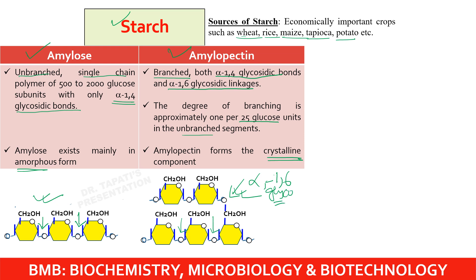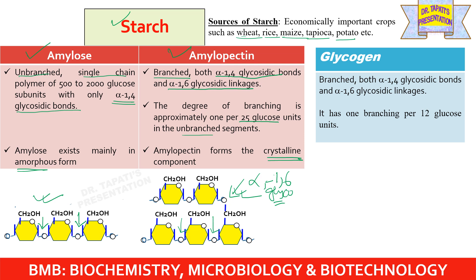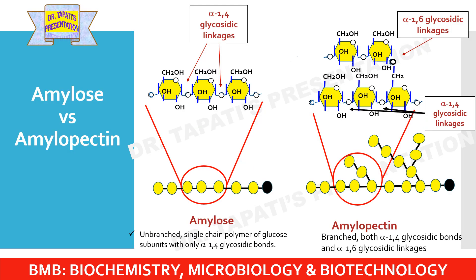Glycogen is another closely related compound functioning as glucose storage in animal cells. It has one branching per 12 glucose units, making it similar to amylopectin but more highly branched. Like amylopectin, glycogen contains both alpha-1,4 and alpha-1,6 glycosidic bonds. This figure clearly shows that amylose has only alpha-1,4 glycosidic linkages, while amylopectin has both alpha-1,4 and alpha-1,6 linkages.